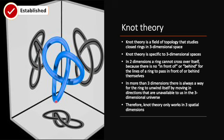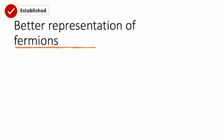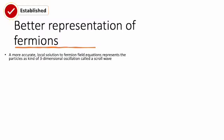This closed knotted ring is a trefoil knot — the simplest kind of knot in knot theory. Unlike a knot in a shoelace, here it's a closed ring with no ends to tie together. It's a ring that closes on itself and is threaded through itself in such a way that it can never be unwound. A more accurate local solution to fermion field equations represents these particles as a kind of three-dimensional oscillation called the scroll wave. Fermions are generated by oscillations — so it's fair to say that fermions are these oscillations.